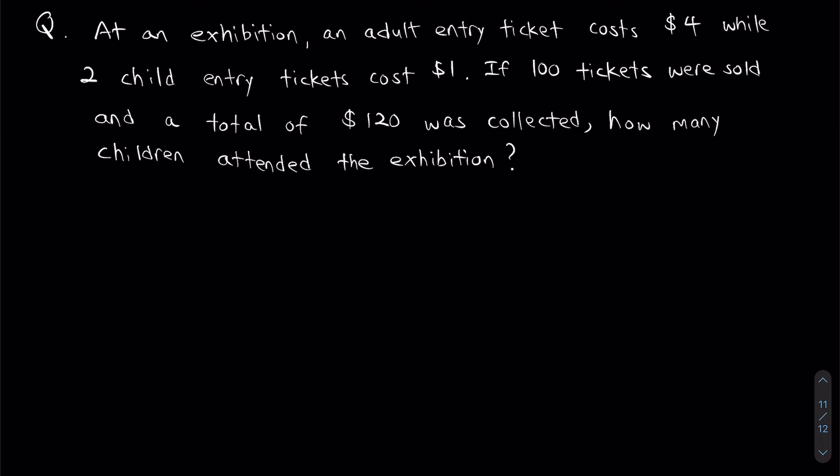The question says: at an exhibition, an adult entry ticket costs $4 while 2 child entry tickets cost $1. If 100 tickets were sold and a total of $120 was collected, how many children attended the exhibition?